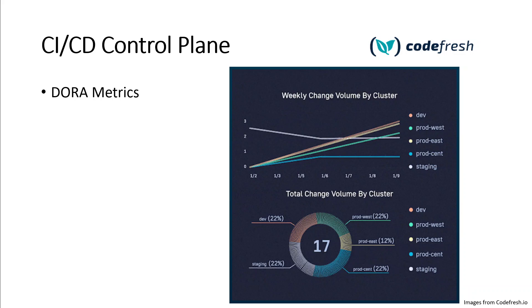Then we have DORA metrics. DORA metrics are used by DevOps teams to measure their performance and find out whether they are low performance or elite performance. There are four metrics used in DORA: deployment frequency, lead time for change, mean time to recovery, and change failure rate. Tracking the effectiveness of your software delivery has never been more effortless with Codefresh, because Codefresh automatically tracks lead time to change, mean time to repair, change failure rate, and deployment frequency at every level of your engineering organization.